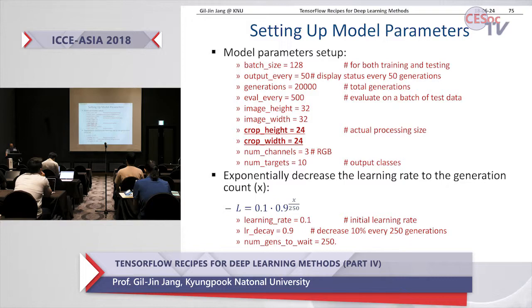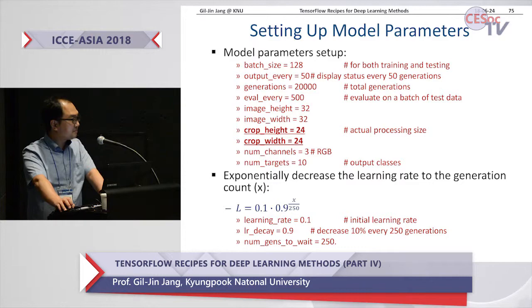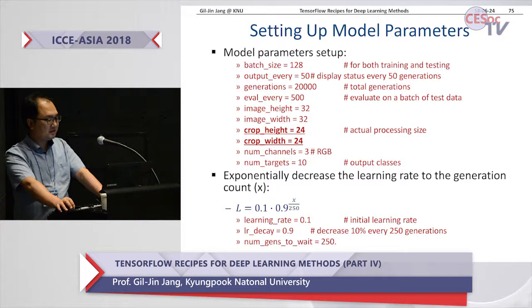The learning rate is missing because the learning rate is more desirable to decrease exponentially as training progresses. We can apply the learning rate by this formula: start from 0.1 and decrease very slowly as the number of generations advances. We start from the initial learning rate 0.1, decay by 0.9, and every 250 generations decrease by 10%.